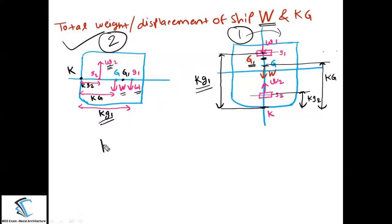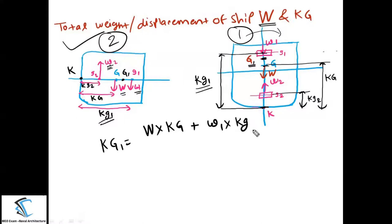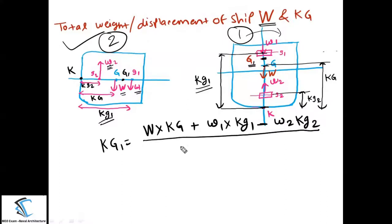You can use this formula for the calculation of new KG: KG1 equals capital W times KG, plus W1 times KG1 (for the added weight), minus W2 times KG2 (for the removed weight, using a minus sign), all divided by the final mass, which is W plus W1 minus W2. Like this you can calculate the new center of gravity location from the keel.